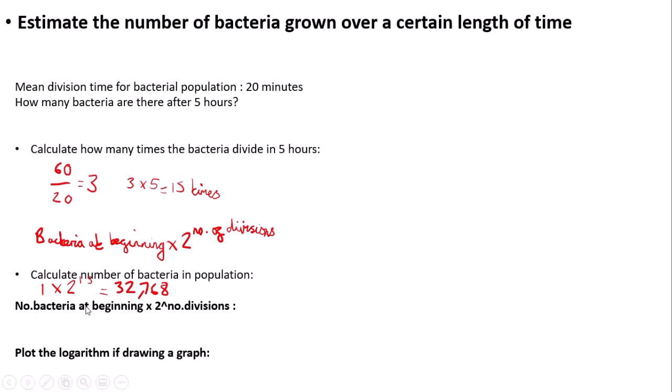If you're drawing a graph representing how bacteria grow over time, you need to plot the logarithm. This is because bacteria divide such large amounts that it's difficult to use that data in a graphical sense. So you take log(32,768) — pressing the log button on your calculator gives a value of 4.52.